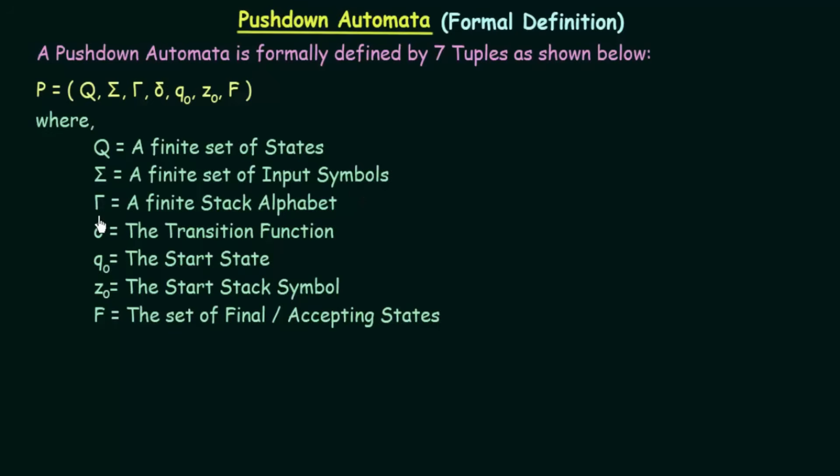Uppercase gamma represents a finite stack alphabet. This is something which was not present in finite automata. What makes push down automata different from finite automata is the presence of a stack, and the stack is what makes push down automata more powerful than finite automata.